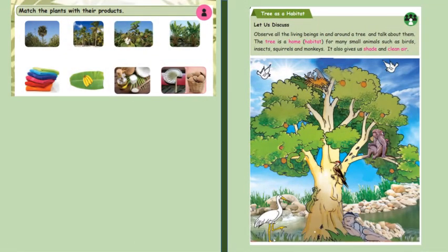We need to match the plant with their products. Palm tree: we make different ornaments and different crafts, and also jaggery. From coconut tree we make coconut oil or coconut milk. Cotton: the fiber is used to make cloth. Banana: we get fruits.